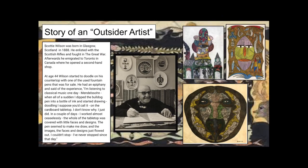Outsider artists often dealt with emotional struggles and created art as an outward path to find inner peace. Here's the story of an outsider artist. Scotty Wilson was born in Glasgow, Scotland in 1888. He enlisted with the Scottish Rifles and fought in the Great War. Afterwards, he emigrated to Toronto in Canada, where he opened a second-hand shop. At age 44, Wilson started to doodle on his countertop with one of the used fountain pens that was for sale. He had an epiphany and said of the experience: